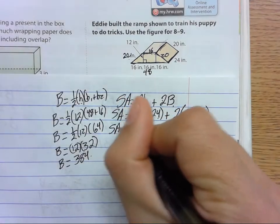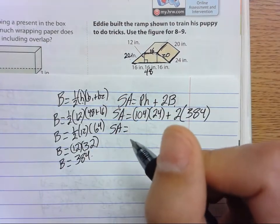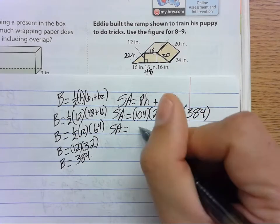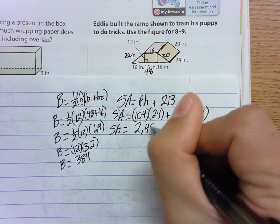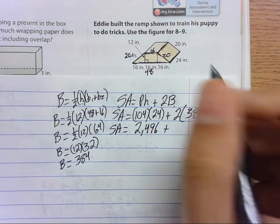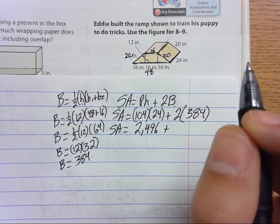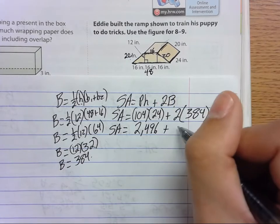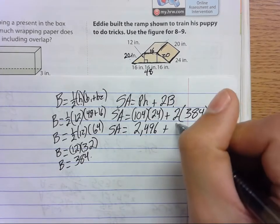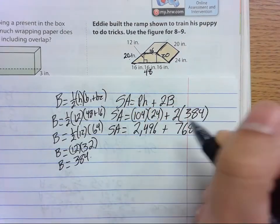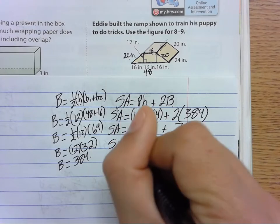Surface area is 104 times 24—that's 2,496—plus 2 times 384, which is 768. So when we add these, surface area is 3,264 square inches.